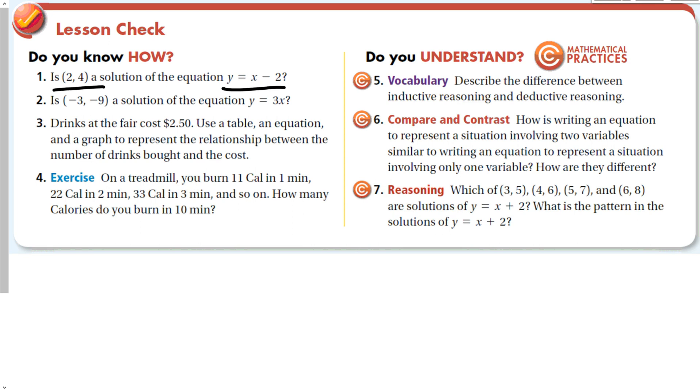How is writing an equation to represent a situation involving two variables similar to writing an equation to represent a situation including only one variable? Both contain variables, both contain unknown values. It's just, with one variable, we are just looking for one quantity in an equation for two variables. We're looking for lots.